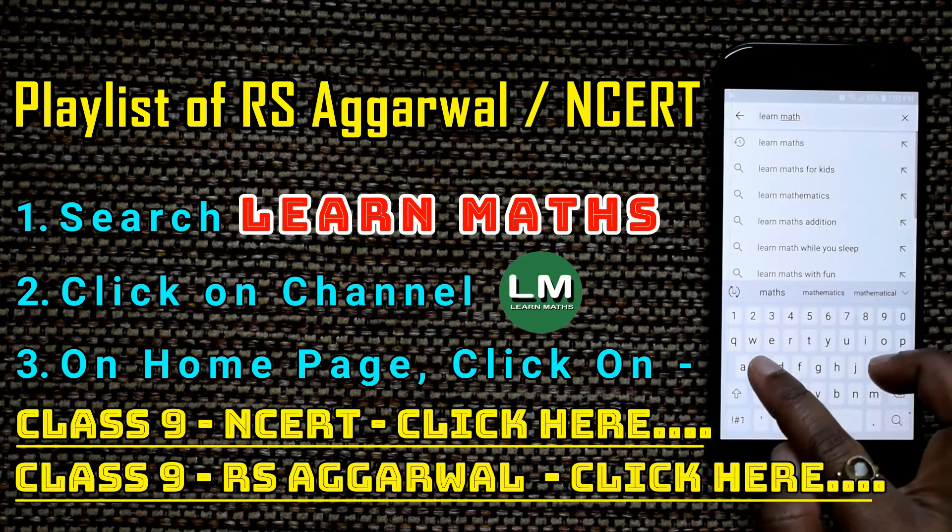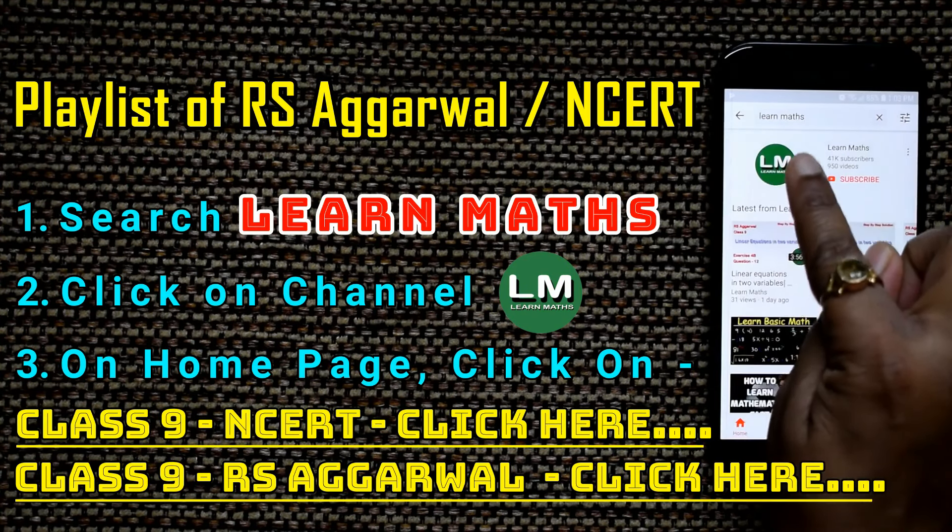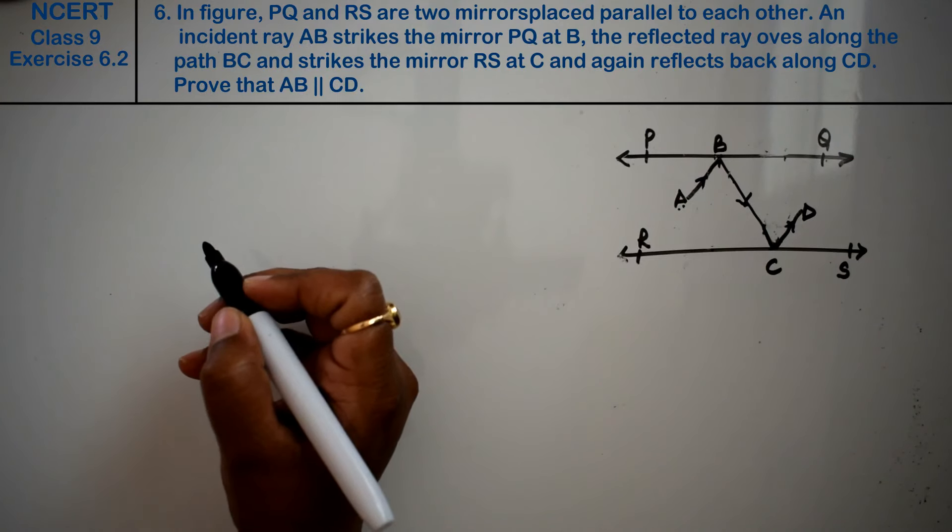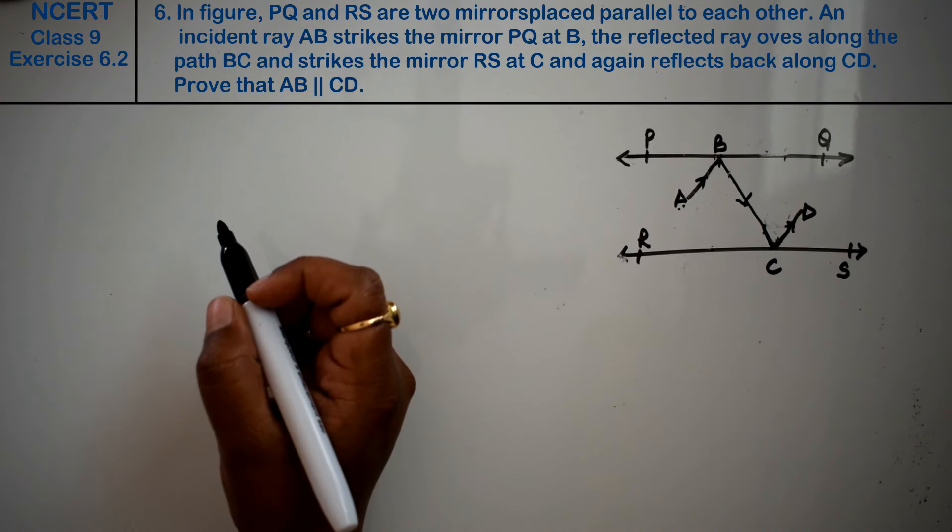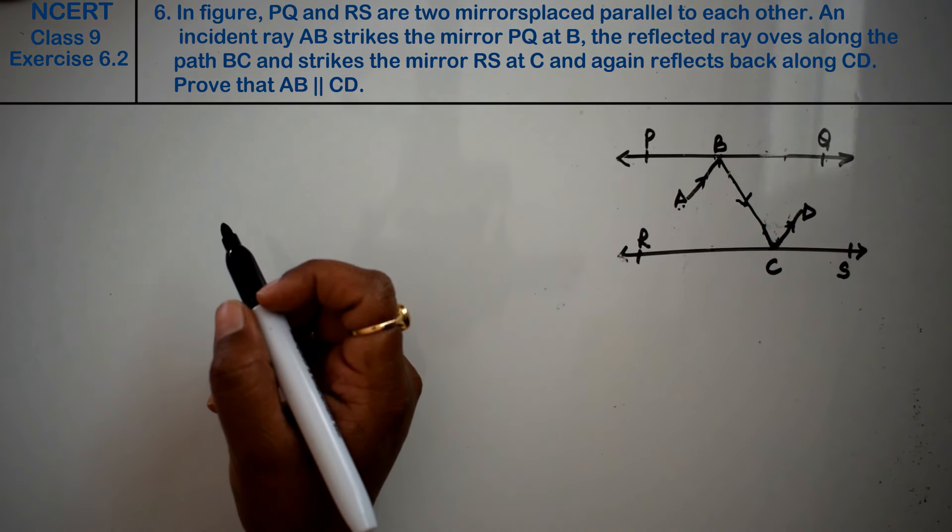Let's do question number 6 of exercise 6.2, that is lines and angles. Question number 6 is: in the figure, PQ and RS are two mirrors placed parallel to each other.